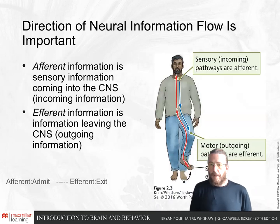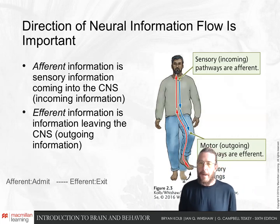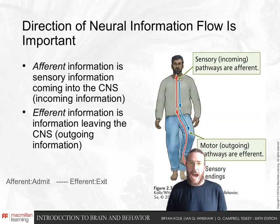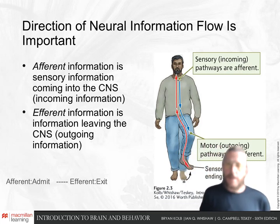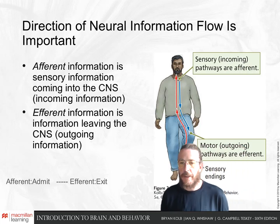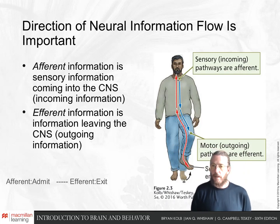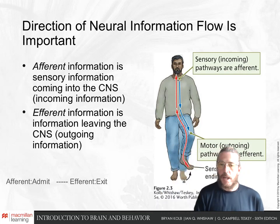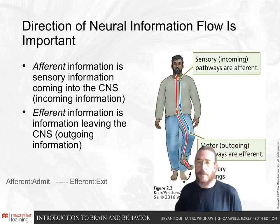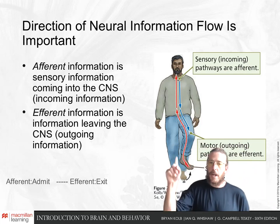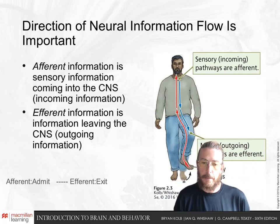Information flows in two directions. Information from the outside world is admitted into our nervous system through what we call afferent connections — 'a' for admit, or afferent. Information also leaves our central nervous system and is transmitted out to our body through efferent connections. For example, when we step on a tack, the incoming information travels up the afferent pathway into the spinal cord, and then efferent information comes down to control our muscles.